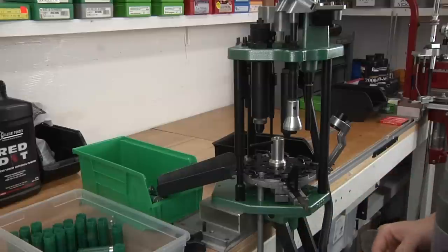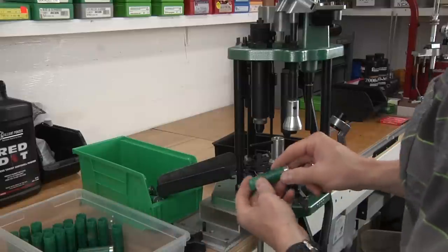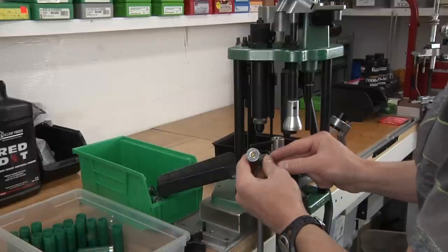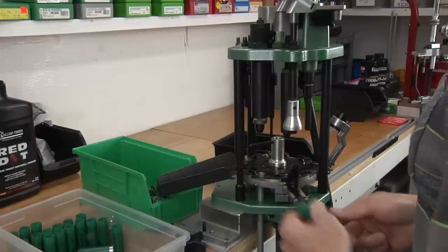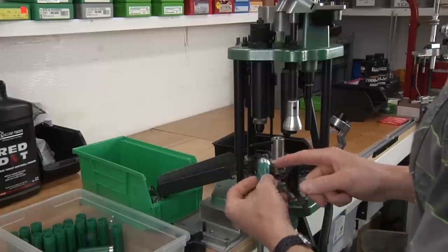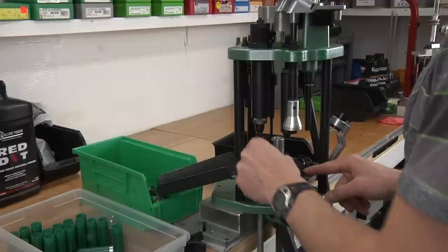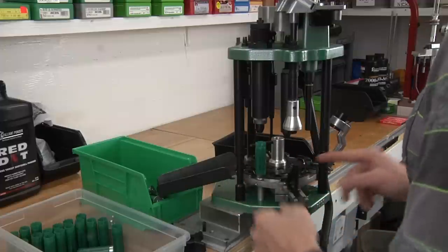Alright, so let's ramp up to full progressive operation here. We've got Remington Gun Club once fired hulls, 12 gauge. Since we're using once fired, we're going to do the full-length size and deprime in station 1 each time.